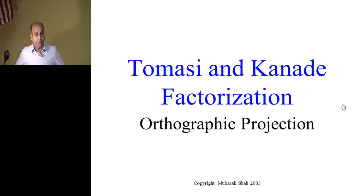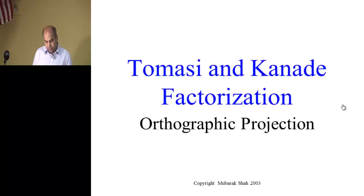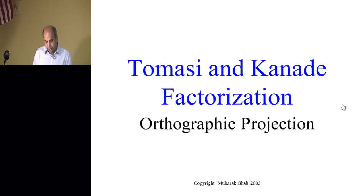So you got an idea — even though Photosynth does many different things, the basic fundamental problem we are going to talk about is: given two images, how do we recover the 3D information? We are going to talk about this particular algorithm by Tomasi and Kanade. Kanade is the same person as in the KLT tracker — K is Kanade, L is Lucas, and T is Tomasi. The camera model assumed is orthographic.